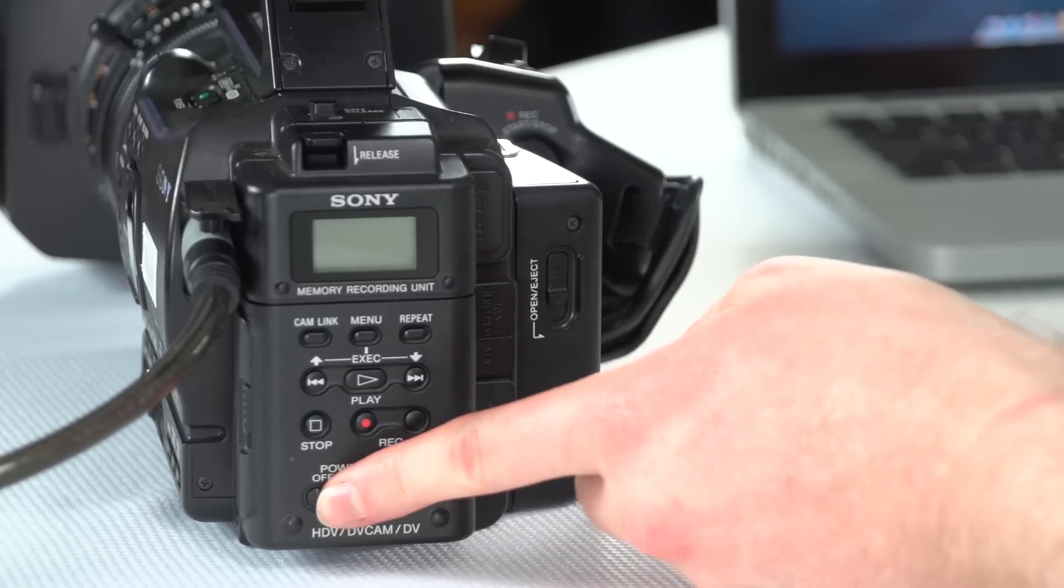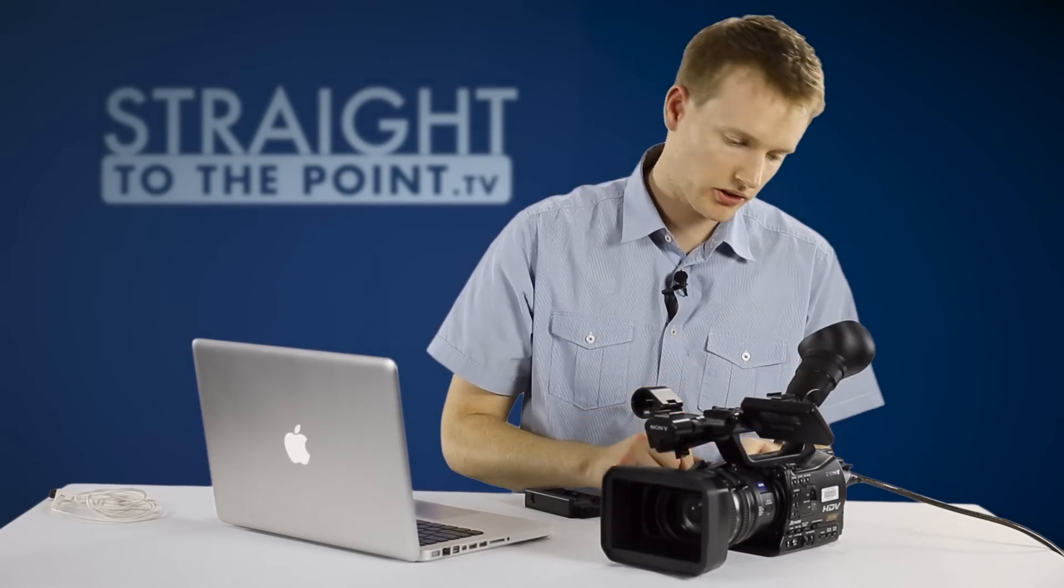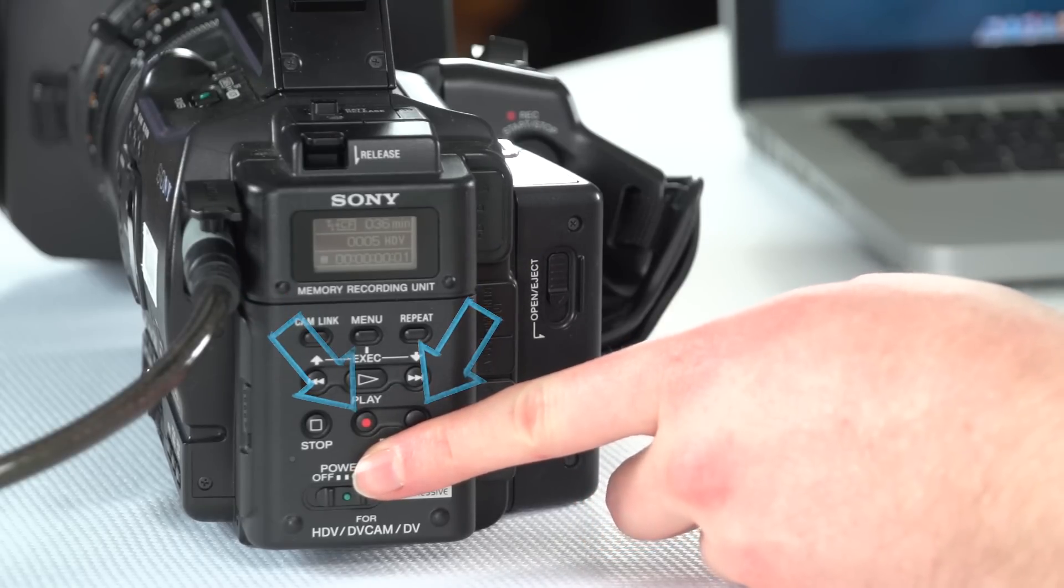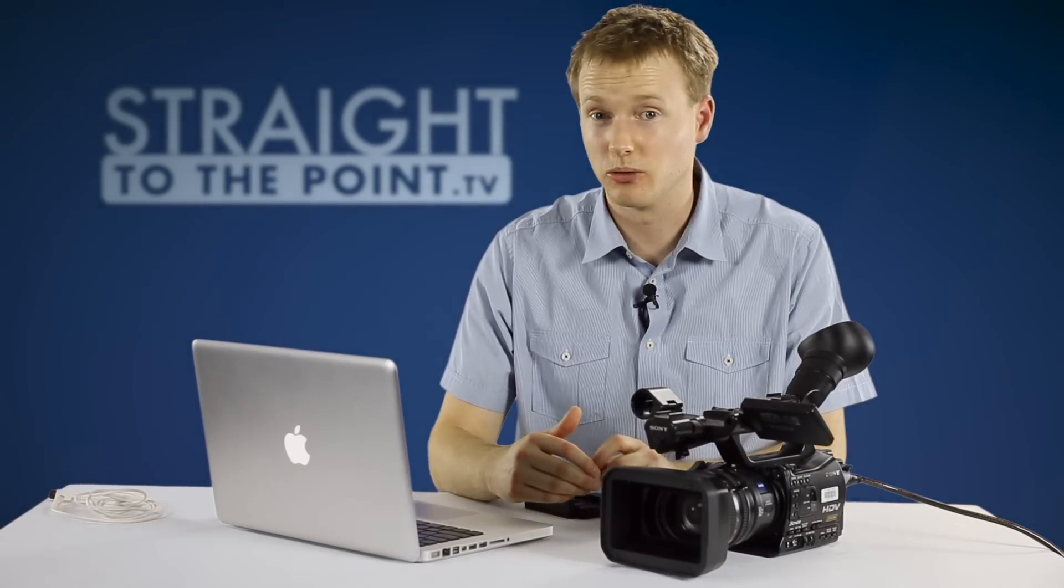Once you've installed it, switch the camera on and switch the memory card recorder on. And once you've done that we need to just double check a couple of options. Now you can get away without doing this and just record by pressing both these buttons simultaneously on the back, but that can be a bit of a pain because the buttons are quite fiddly.